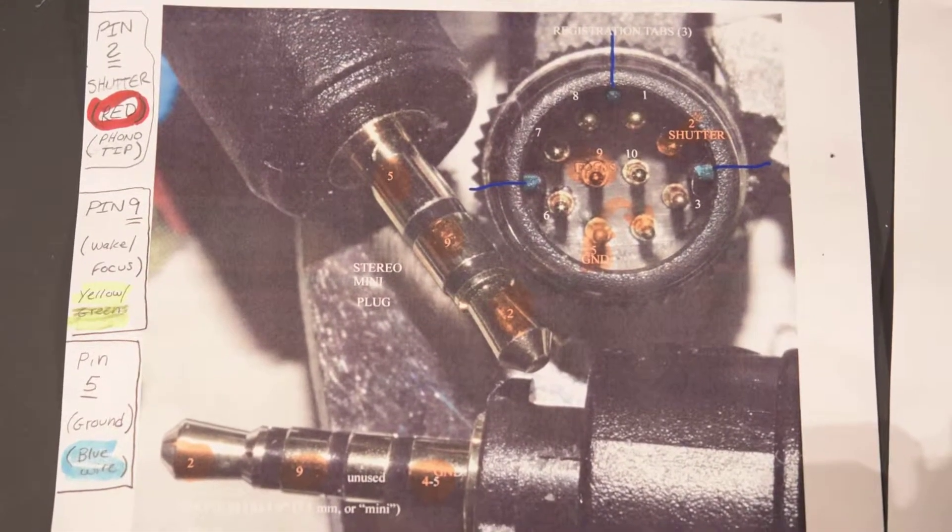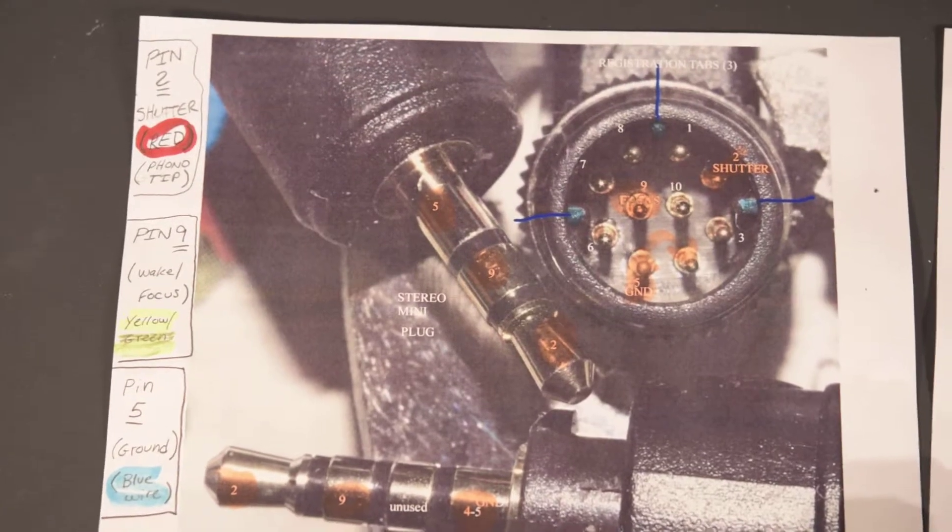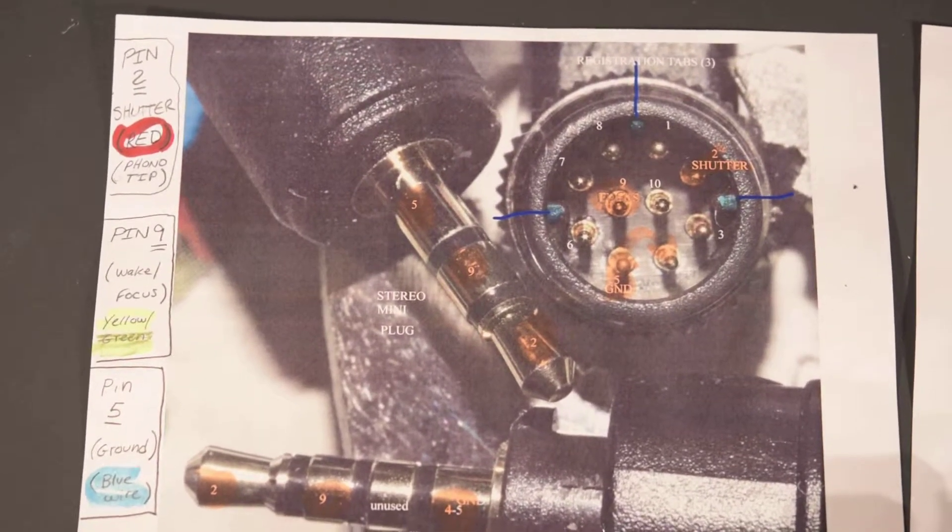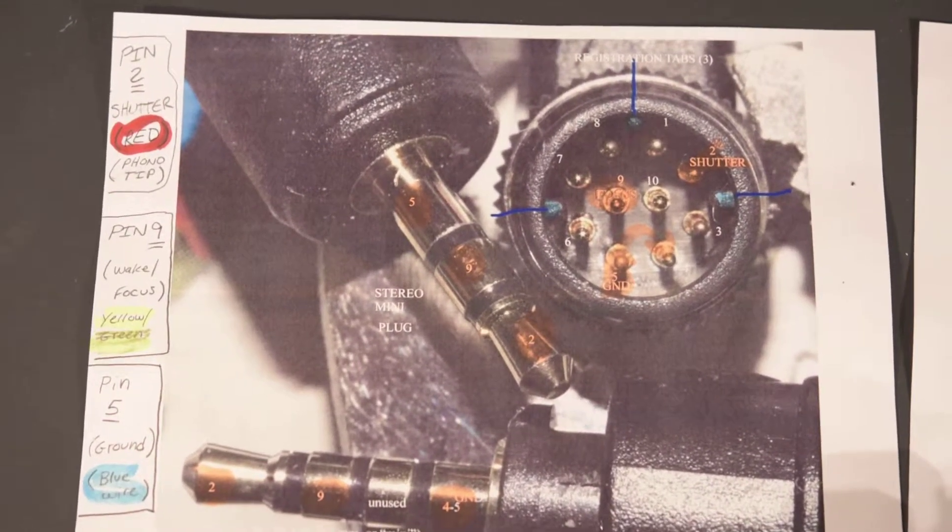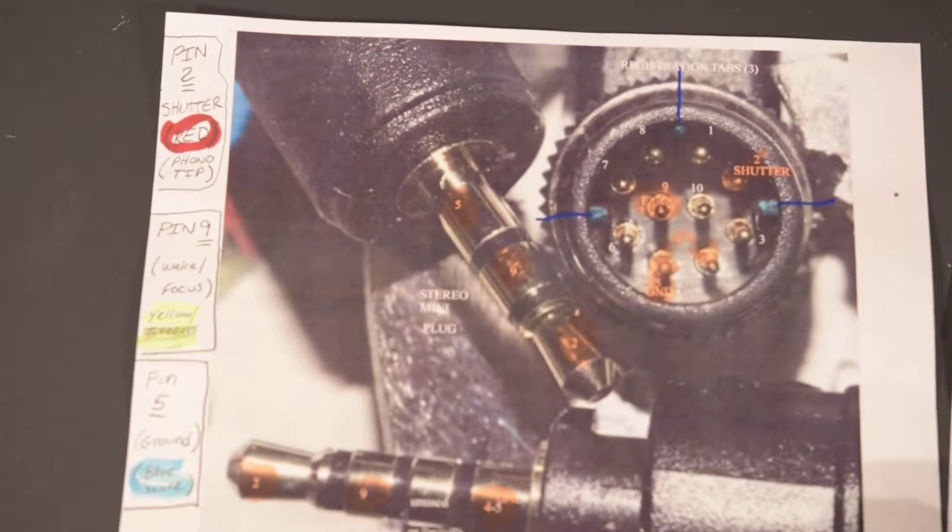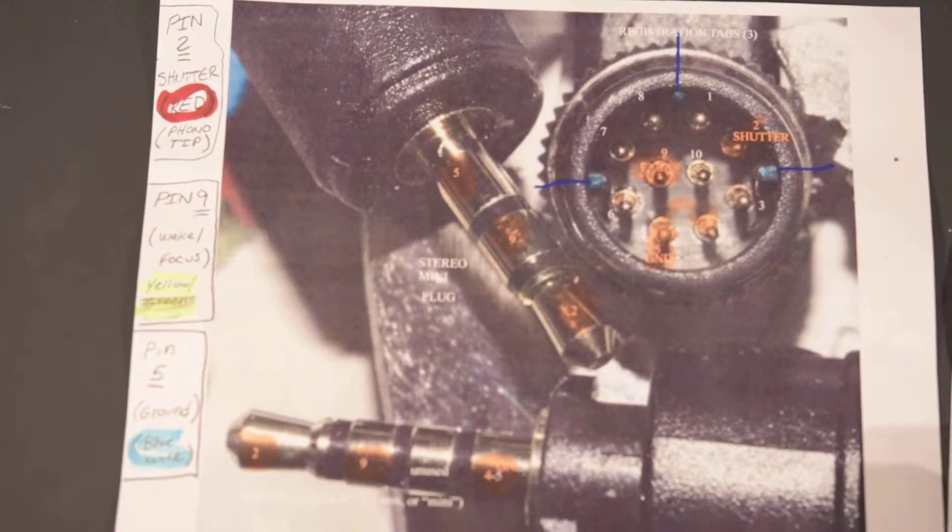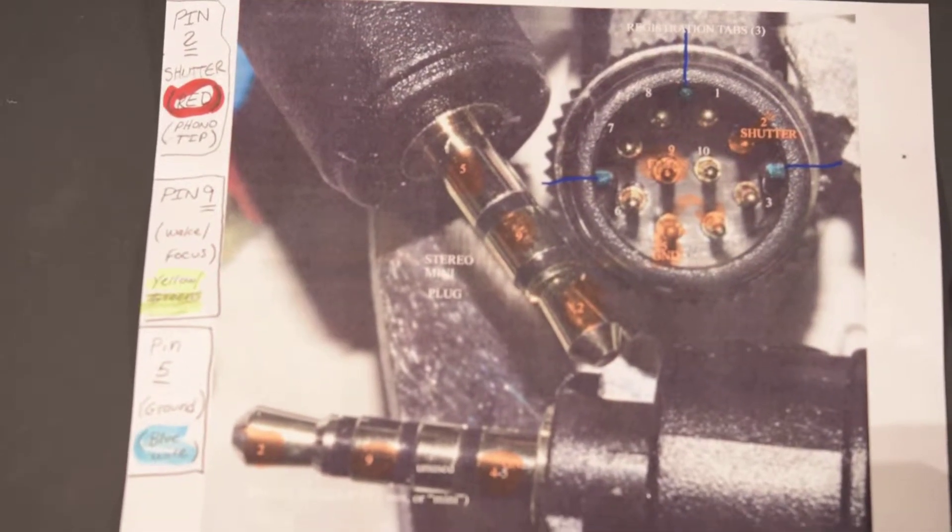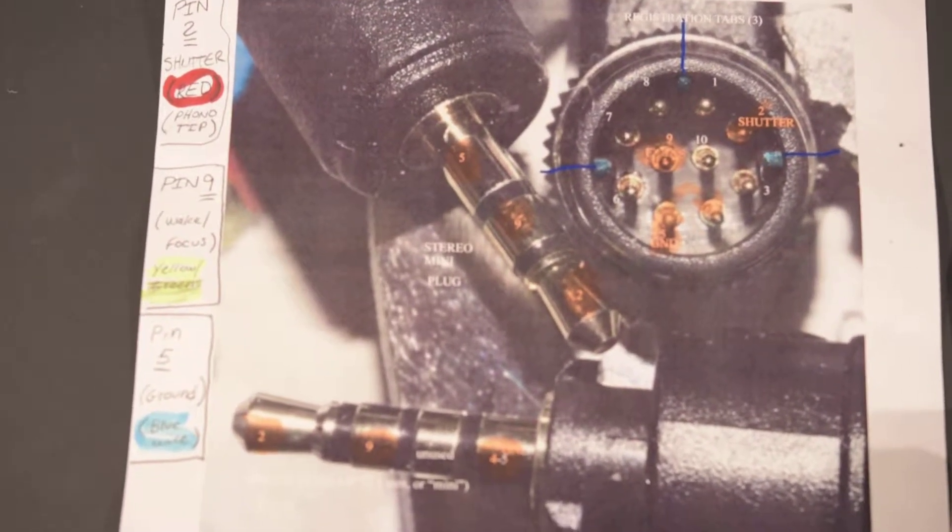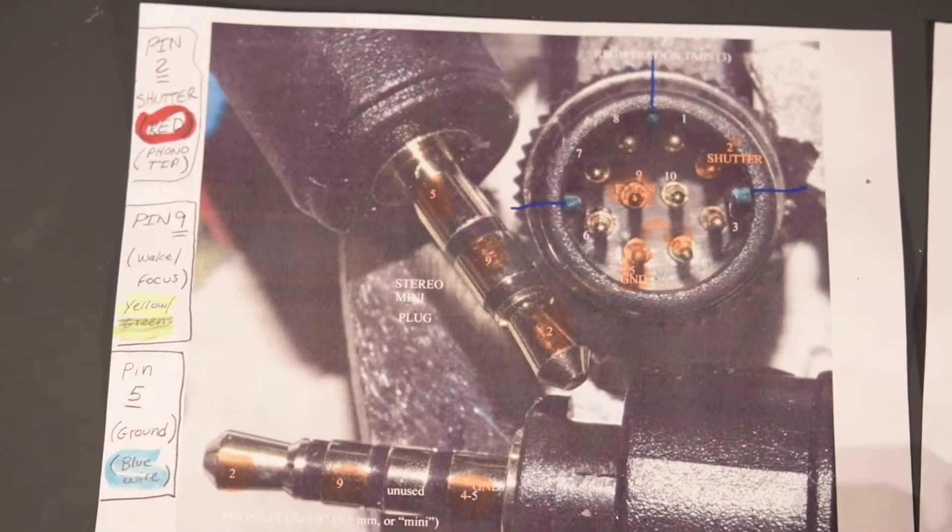And it did come with a phono plug but I decided to take it off and that's why I put it to the telephone RJ11 cable. So on this particular one, yours might be different, the one for the shutter was a red lead, the one to wake the camera was yellow or yellowish green, and then the ground was blue.